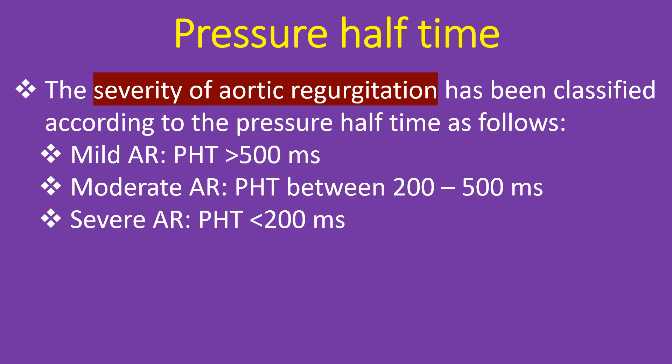The severity of aortic regurgitation has been classified according to the pressure half time as follows: mild AR — PHT more than 500 ms; moderate AR — PHT between 200 to 500 ms; severe AR — PHT less than 200 ms.